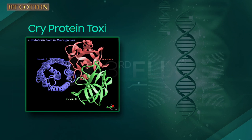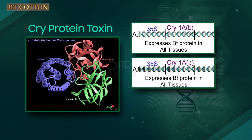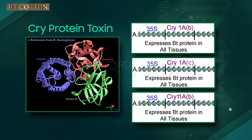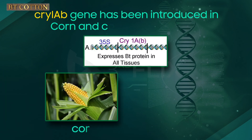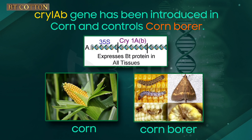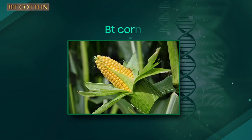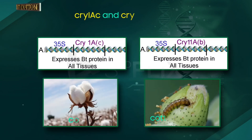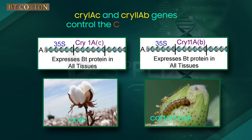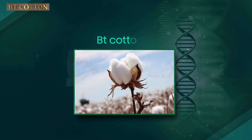There are a number of CRY genes. For example, the proteins encoded by the genes CRY1AB, CRY1AC, and CRY11AB. CRY1AB gene has been introduced in corn and controls corn borer; genetically modified corn is BT corn. CRY1AC and CRY11AB genes have been incorporated in cotton and control the cotton bollworms; genetically modified cotton is BT cotton.